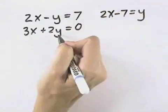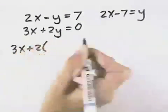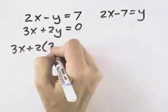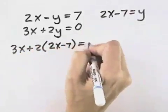Now I can use that to replace y in my second equation. So I have 3x, but then 2 times, and instead of y, I'm going to have 2x minus 7. And that will equal 0.